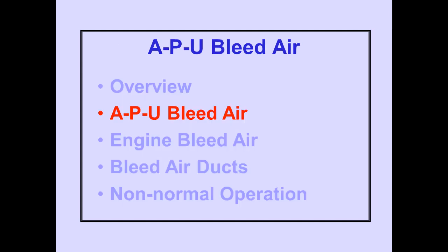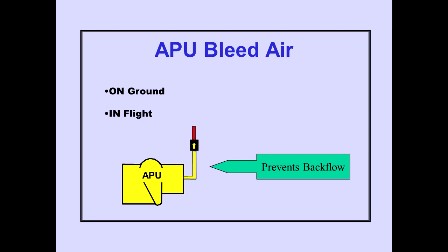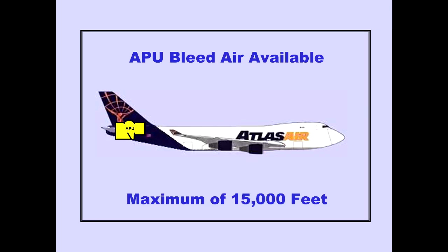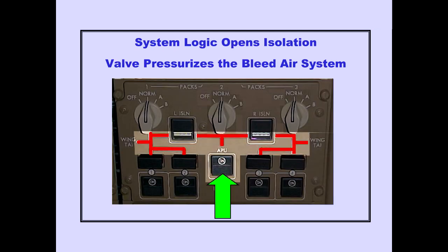We will now discuss APU bleed air. APU bleed air may be used on the ground or in flight. A check valve prevents backflow of bleed air from the duct to the APU. APU bleed air is available up to a maximum of 15,000 feet. Pushing the APU bleed air switch on allows system logic to open the APU bleed air isolation valve and pressurizes the bleed air system.